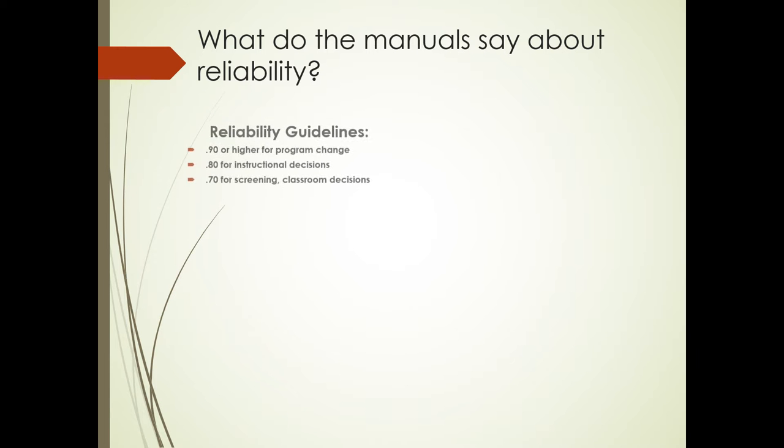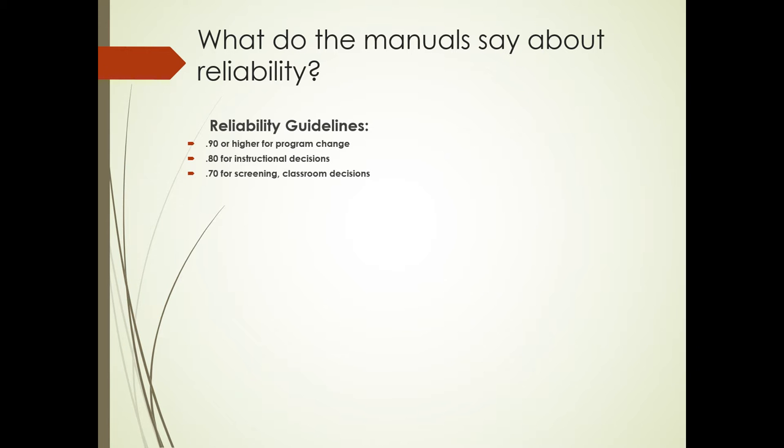So what did the manual say about reliability? Keep in mind that reliability guidelines are such that you want to see at least a reliability of 0.70 if you're going to use it to make classroom decisions on students. 0.80 for instructional decisions such as a Tier 2 placement. And 0.90 or higher for program change like qualifying a student for special education services.